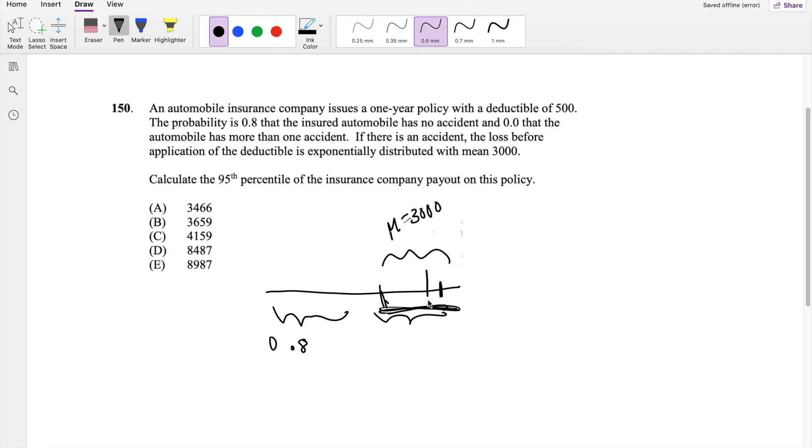And we're asked to find the 95th percentile, like right here, 95th percentile. But the thing is, this is a conditional probability because it's given that it has an accident.